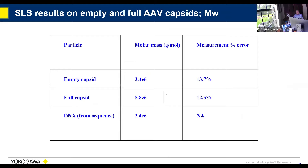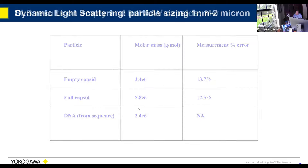When we started with AAVs provided by Spark Therapeutics, we measured the empty capsids at 3.4 × 10^9 Daltons. The full capsids, as expected, are more massive. And for the DNA, we have a well-known sequence, so we know the mass from that. Those are our static light scattering results on mass.